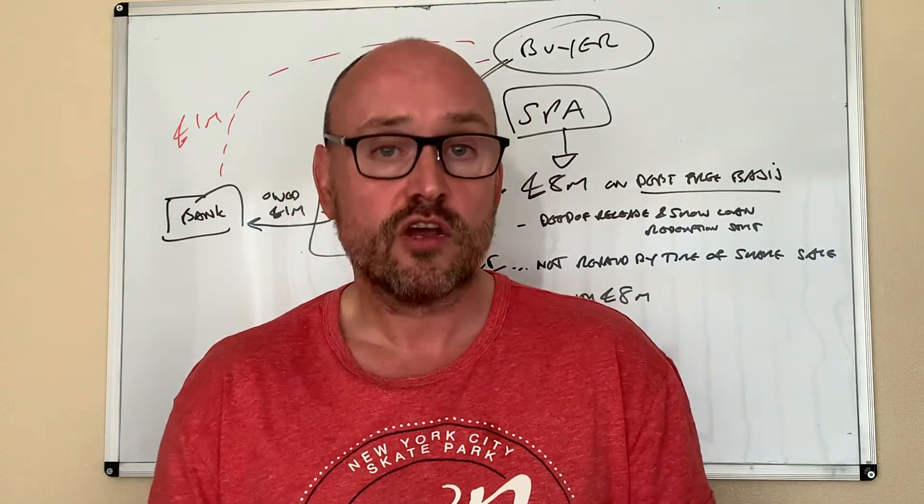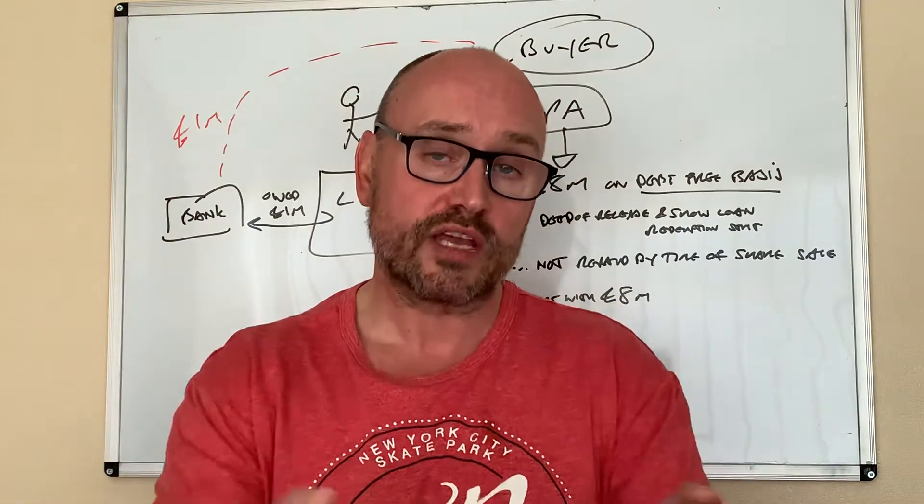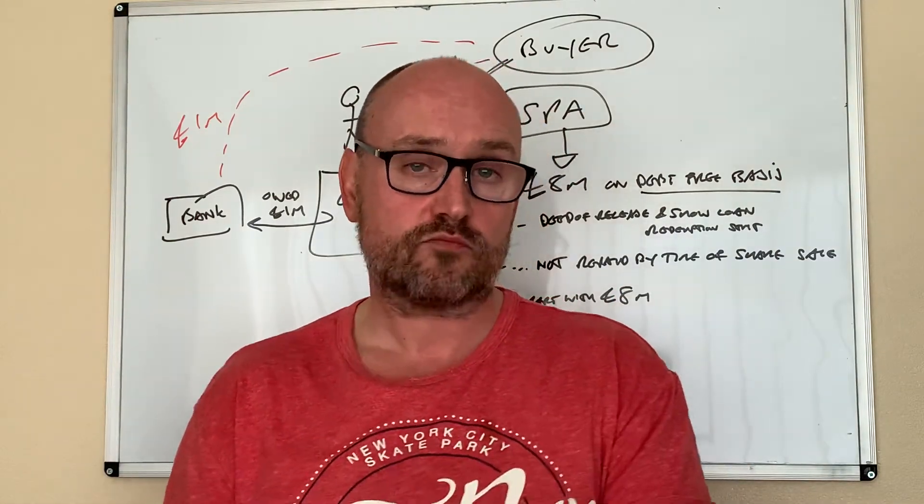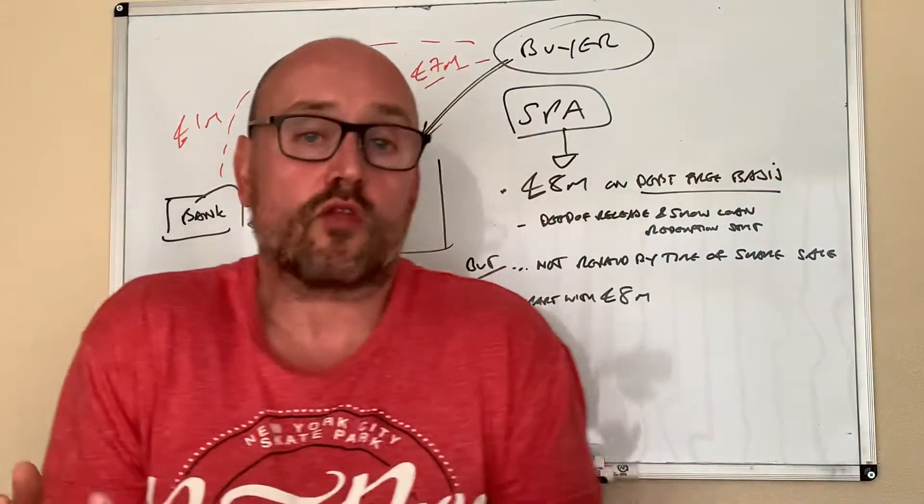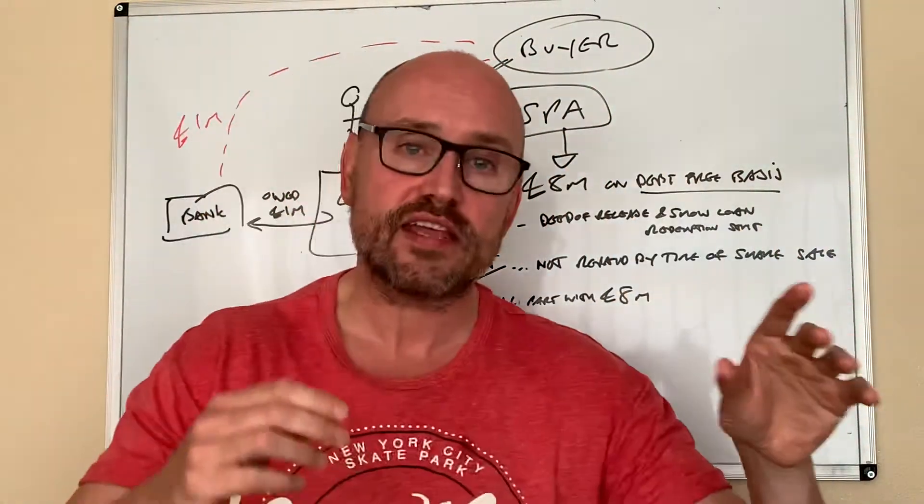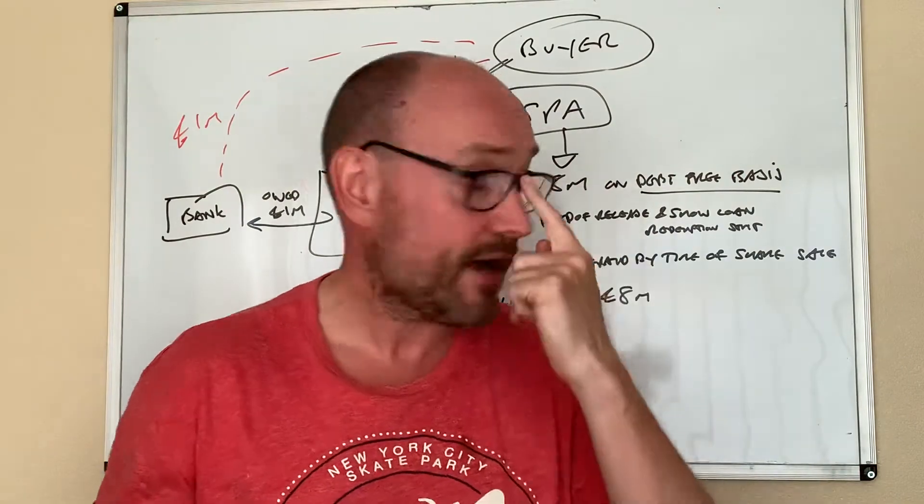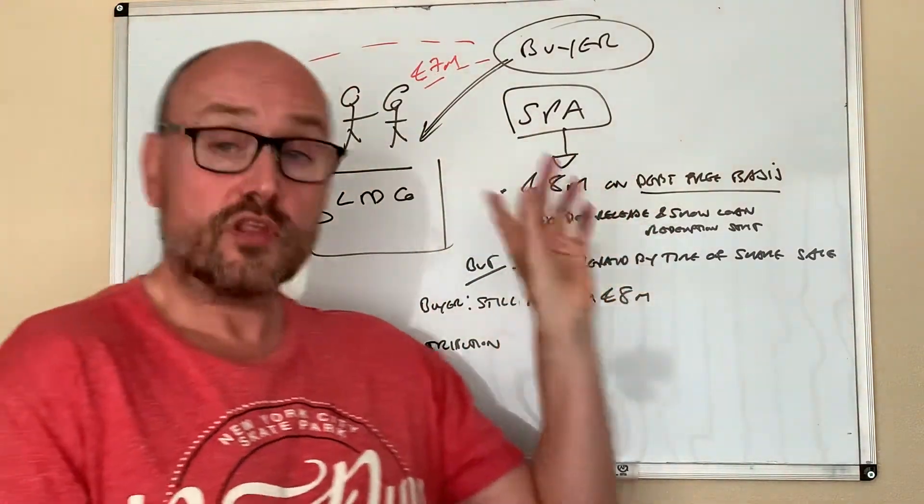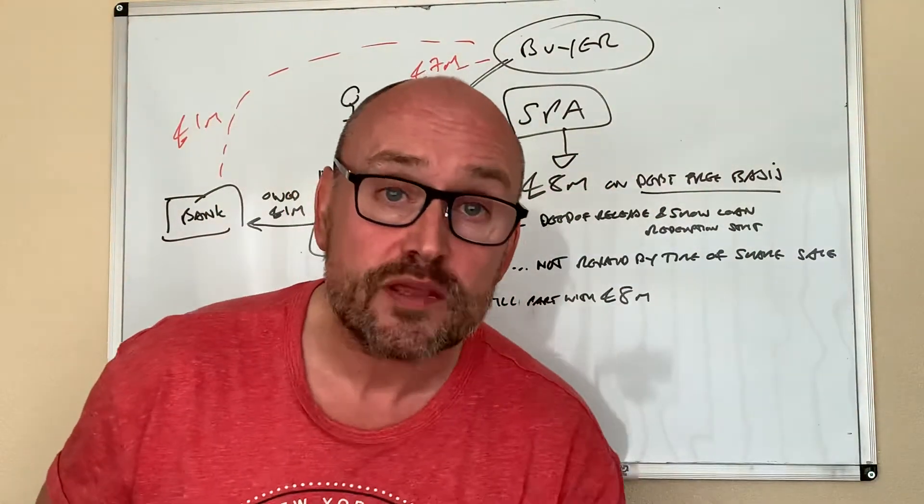That's the arrangement. You pay off the million pound bank loan and we'll give you eight million pounds for your shares. So that was what they agreed on. Now the SPA, the Sale and Purchase Agreement, that had it all spelled out and it said eight million but it's got to be on a debt free basis.